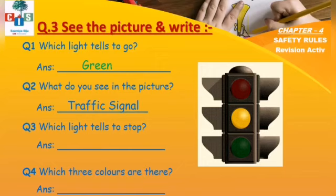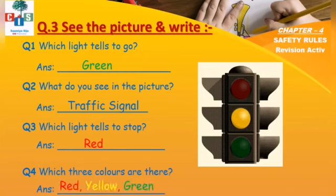What do you see? Yes, it's a traffic signal. Very good. Now, third question: which light tells us to stop? Yes, red color — red color tells us to stop. Then, fourth question: which three colors are there on the traffic signal? Yes — red, yellow, and green. Very good.